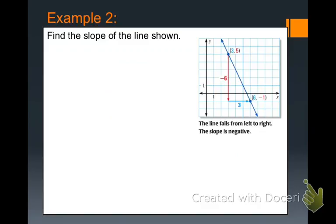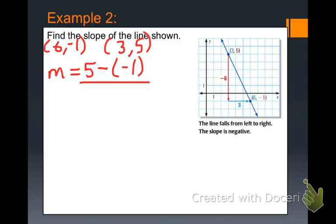Let's do another example. Find the slope of the line shown. Remember, you can find the slope between any two points that fall on the line, but in this case, we have two that are nicely marked for us. First we have our points, 6, negative 1, and 3, 5. To use my formula, m is going to equal 5 minus a negative 1 over 3 minus 6.